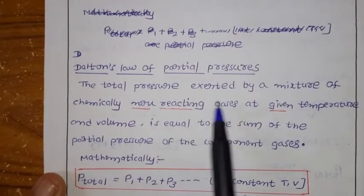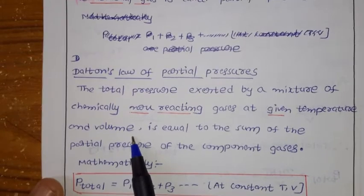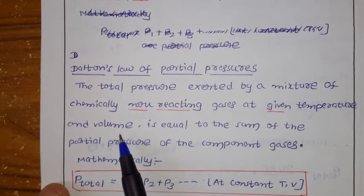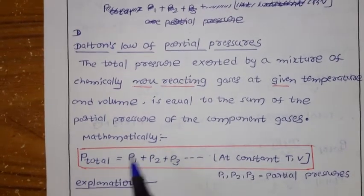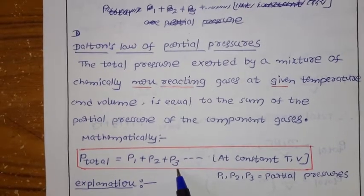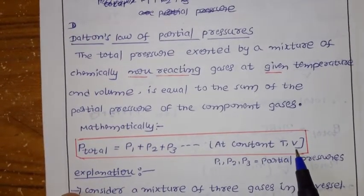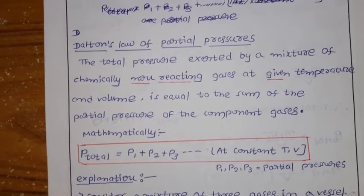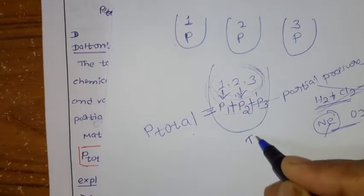The total pressure exerted by a mixture of chemically non-reacting gases at a given temperature and volume — so for this law, temperature and volume are constant — is equal to the sum of the partial pressures of the component gases. Mathematically: P_total = P1 + P2 + P3, at constant temperature and volume.